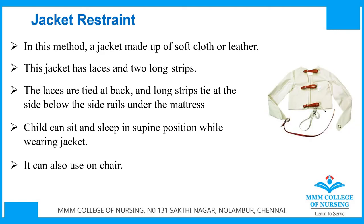Jacket restraint: the jacket is made of soft cloth or leather material. It has laces and two long straps. The laces are tied at the back and the long straps are tied at the sides below the side rails under the mattress. The child can sit and sleep in a supine position while wearing the jacket, and it can also be used on a chair.